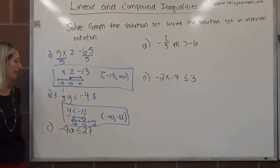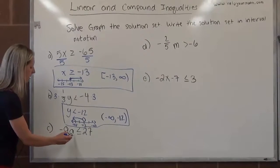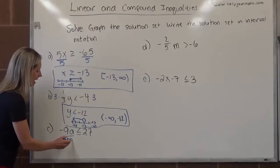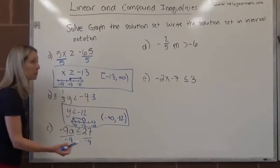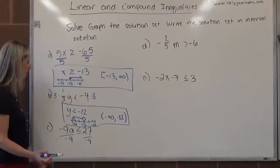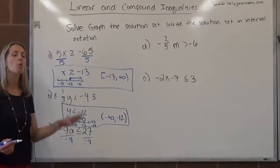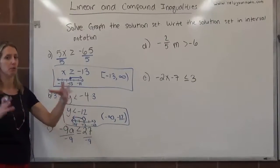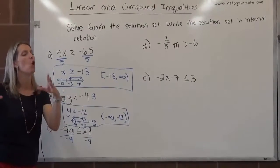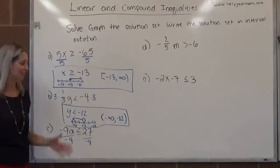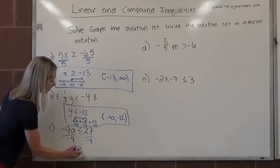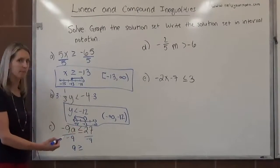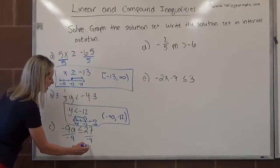Letter C: negative 9a is less than or equal to 27. We're going to divide both sides by negative 9. Little bells and whistles should be going off in your brain because we just divided by a negative — when we divide both sides by a negative, we flip the inequality symbol. What was negative is now positive; what was positive is now negative. So we're going to say a is greater than or equal to 27 divided by negative 9, which is negative 3.